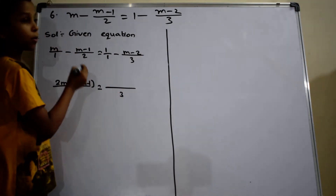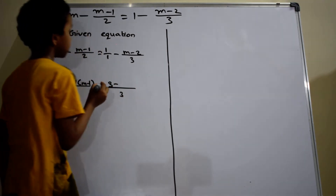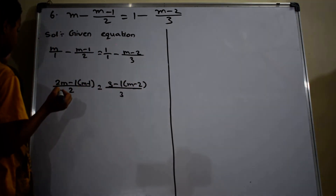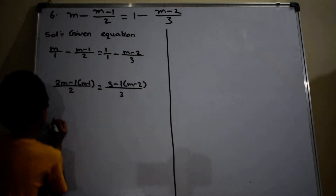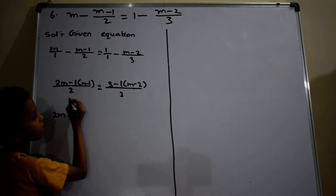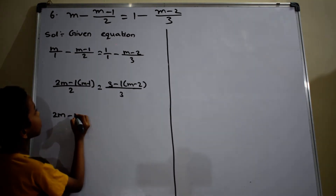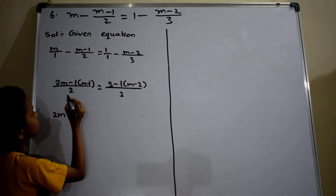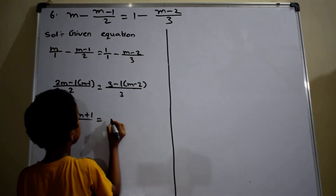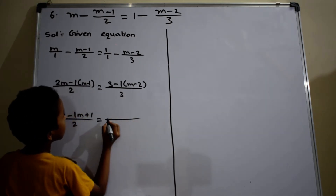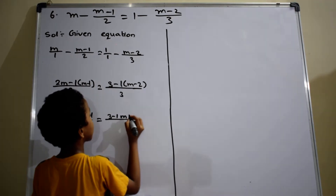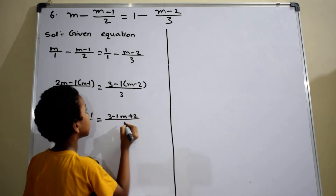1 into (M minus 1) equals to 1. Then 1 into (M minus 2). Minus 1 equals to plus 1 by 2. Then 1 into (M minus 2) equals to M. And minus 1 into (M minus 2) equals to plus 2 by 3.